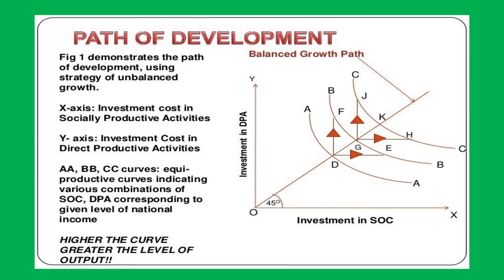What is the path of development? We are looking at a graphical representation. The X-axis represents investment in SOC, and the Y-axis represents investment in DPA. We are looking at curves AA, BB, and CC. These are combinations of SOC and DPA to achieve a given level of national income — higher the curve, higher the output.